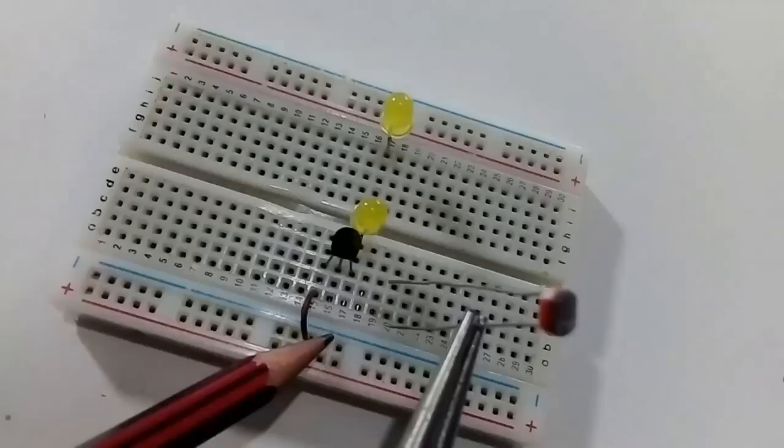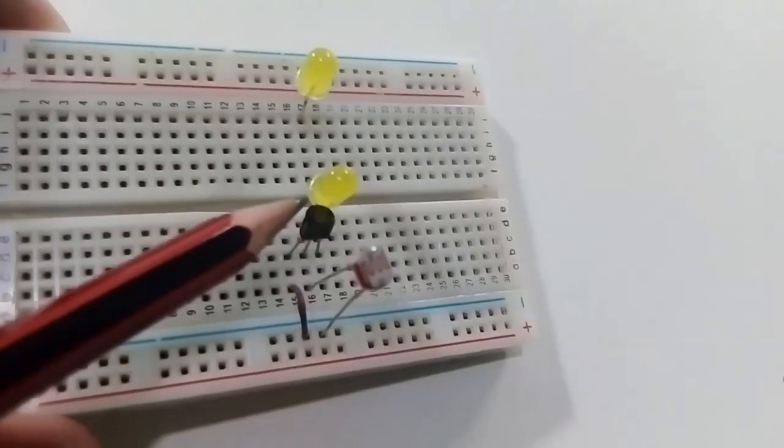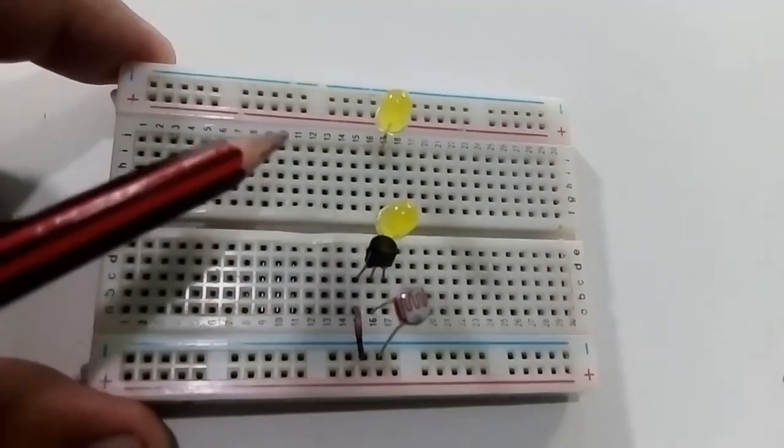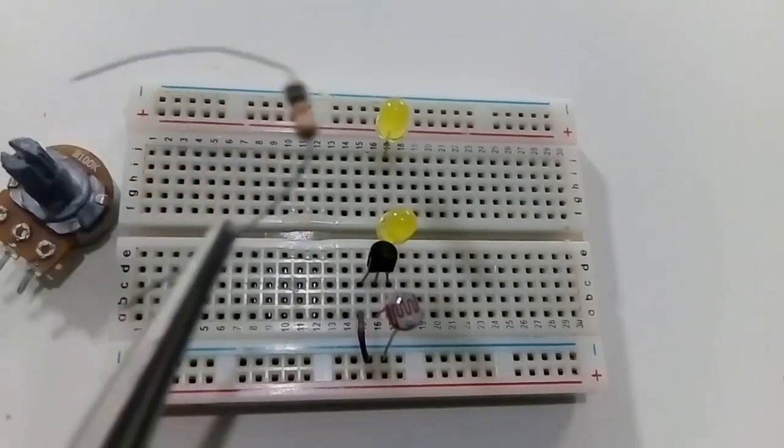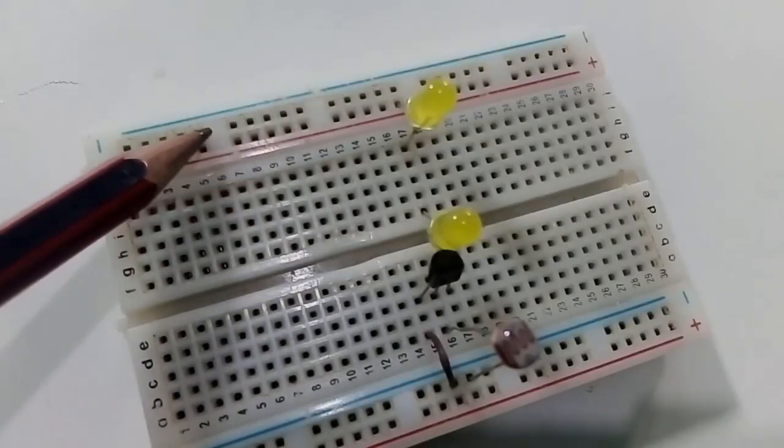We are going to constantly deactivate the transistor by its base using a photocell connected to the negative. Remember that the transistor is activated by positive signal. We will be able to send a positive signal to the transistor through a potentiometer and a resistor.